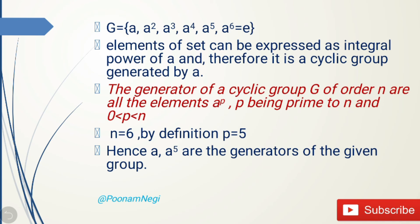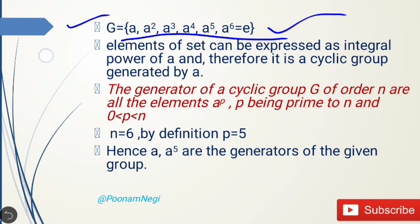Now let's get back to the original problem. As you can easily see, the elements of the set G can be expressed as integral powers of a, and therefore it is a cyclic group generated by a — meaning a is the generator for this group G. This follows from the simple definition.